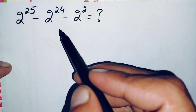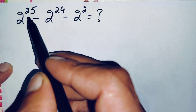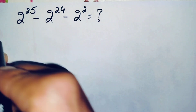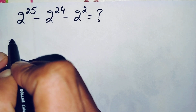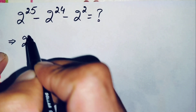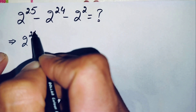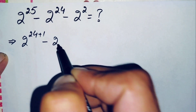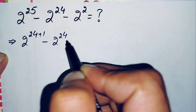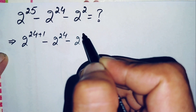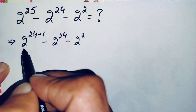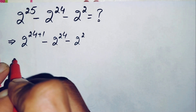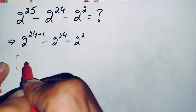To solve this math problem, first we will change the power 25 to the sum of 24 plus 1. So this implies we can write 2 raised to power 25 as 2 raised to power 24 plus 1, minus 2 raised to power 24, minus 2 raised to power 2. Here in this one term we will use an exponent math property.